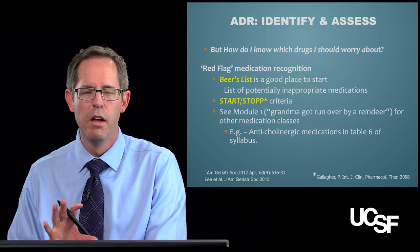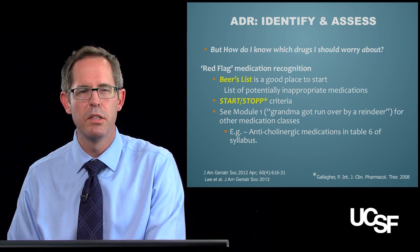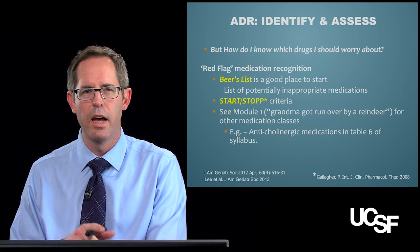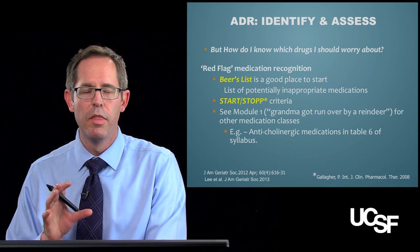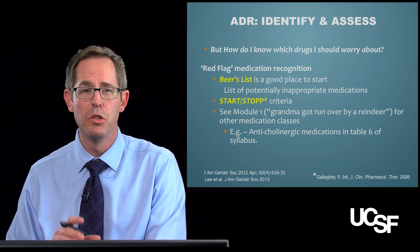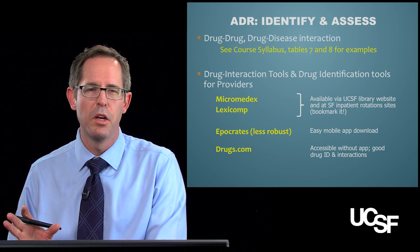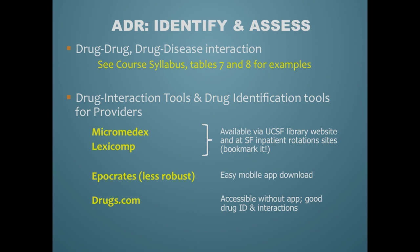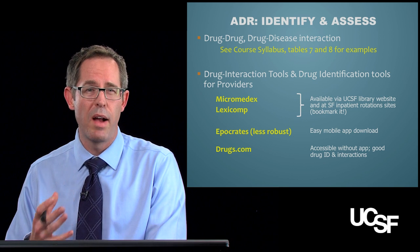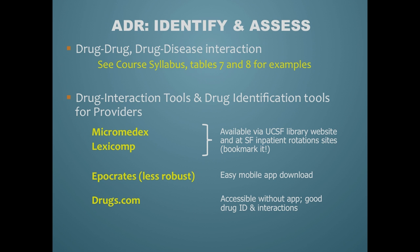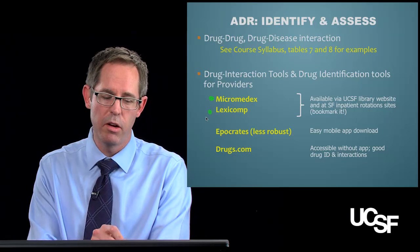Another resource is the START and STOP criteria, which focuses on drugs that should be present or discontinued, usually based on disease state or prognosis of your elderly patient. Also, if you didn't go back and look at module one where grandma got run over by a reindeer, there are drug classes in general — like anticholinergic medications — that you should be wary of whenever you suspect an adverse drug reaction. For drug-drug interactions, there's no way to go over all of them, so look in the course syllabus at tables seven and eight for common examples. Micromedex and Lexicomp are two reputable sources available at all rotational sites for the three main hospitals in San Francisco. An app many physicians like is Hippocrates — it's very easy to use. And if all you have is the internet, drugs.com is actually fairly good for drug interaction IDs, as most of its information comes from Micromedex and Lexicomp.